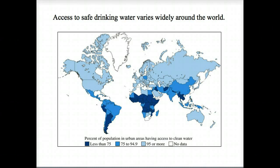Access to clean water varies around the world. In many places where there is conflict, there is also poverty and a spoiled environment. Healthy social systems depend on healthy ecosystems, which depend on clean water.